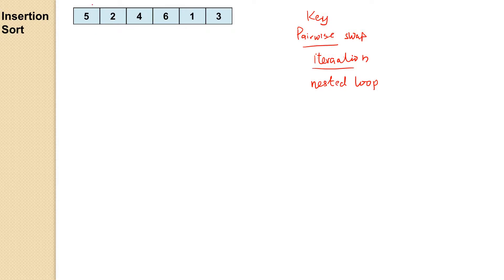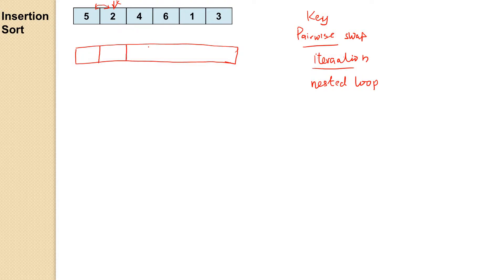At each step of the iteration, insertion sort chooses two items — the first and the second item — and compares them. The key is always the second item. It starts with a key K and compares it with the item to the left of it. If the item to the left is greater, it's going to do a pairwise swap. In the first iteration, there will be a pairwise swap of five and two, so two comes first and then five, while six, one, and three remain.